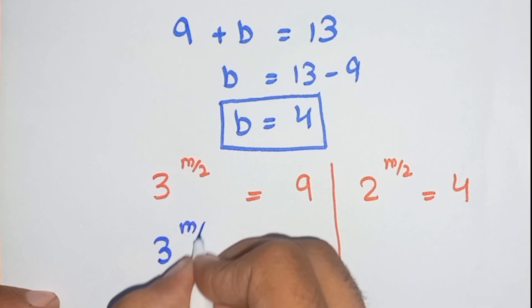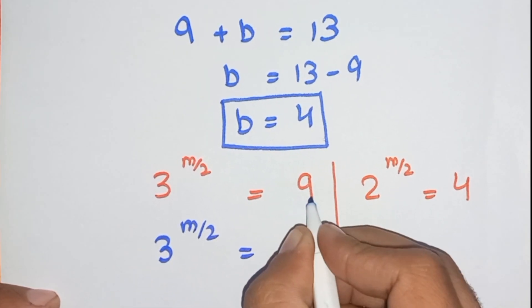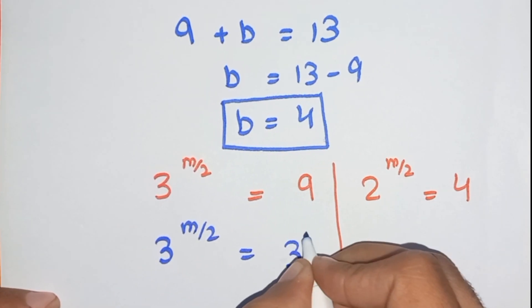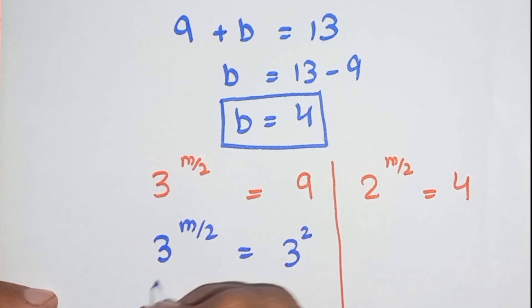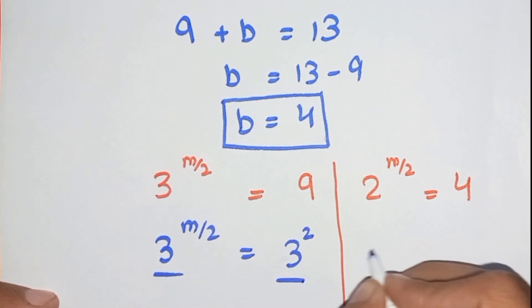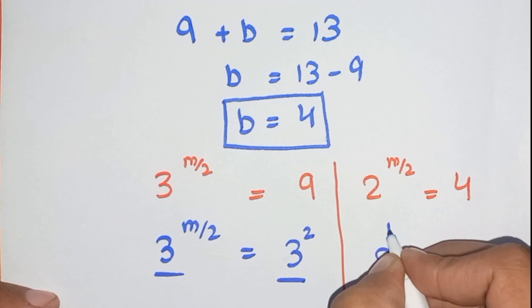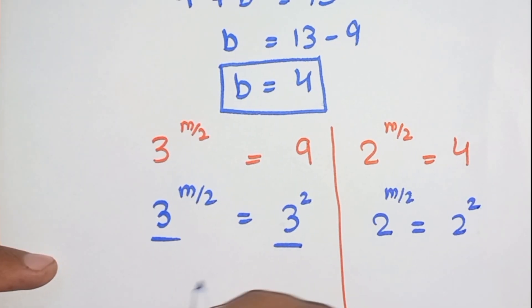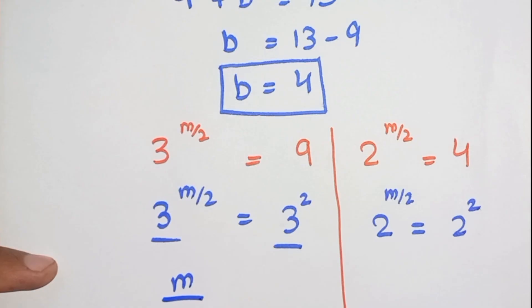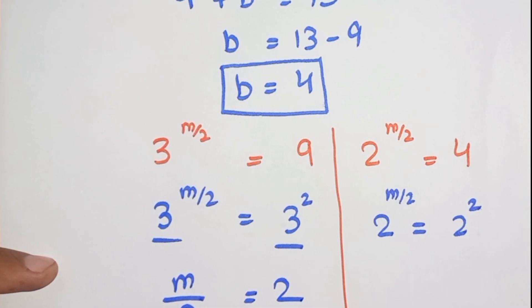3^(m/2), and 3 times 2 equals 2 times 3, the base is the same. And here again m/2, and m/2 equals 2.